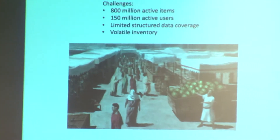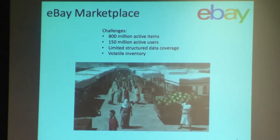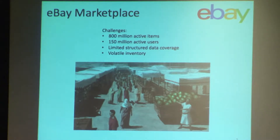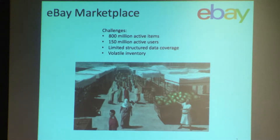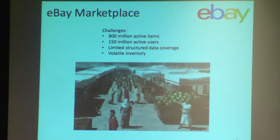Let's first talk about eBay and some of the challenges we face when we serve recommendations. To start is scale — on any given time, there's over 800 million live items on the site and over 150 million users. Another challenge is limited structured data coverage. Some people sell iPhones, which have structured catalog attributes, but things like antiques or clothing have no such attributes, making recommendations difficult. Another problem is volatility — some items only appear for one week and never surface again. All these combined make it very difficult to use traditional collaborative filtering methods.